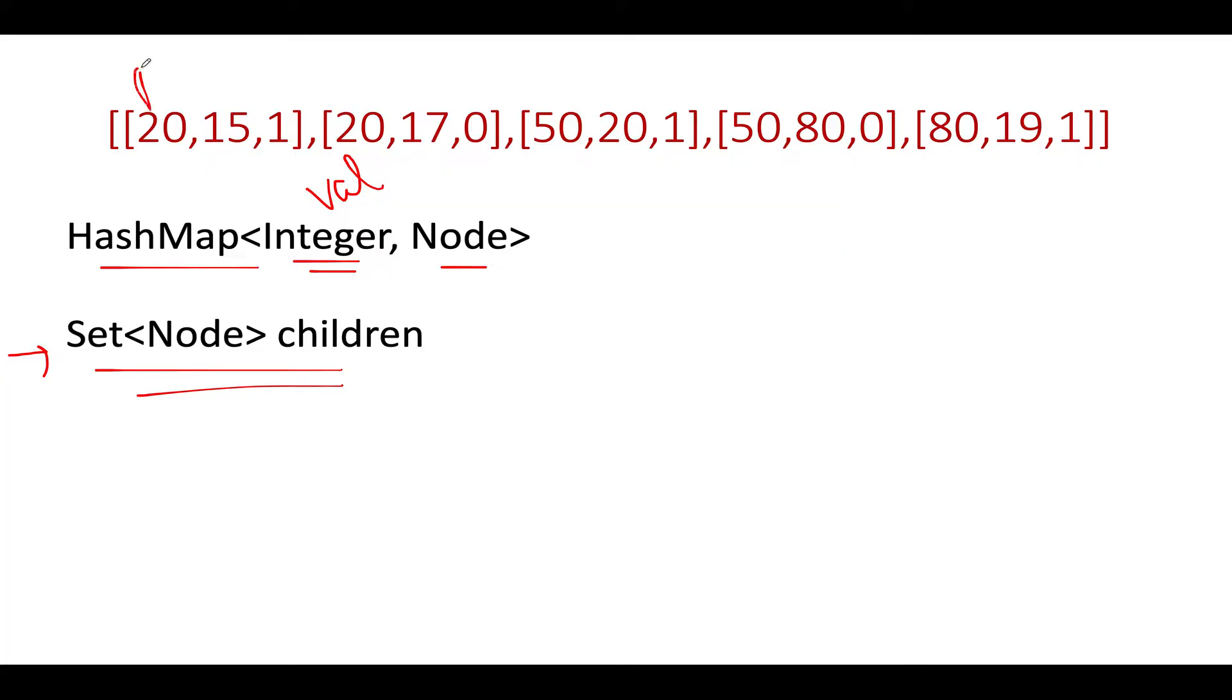Let's get started. The first element that we see is 20 as a parent, 15 as a child, and this is a left child. We see that 20 is not part of the hash map, as a result we should create a new node named 20. We go ahead and create 20. Along with this, we add this node into the hash map, so 20 comma node of 20 gets added into the hash map.